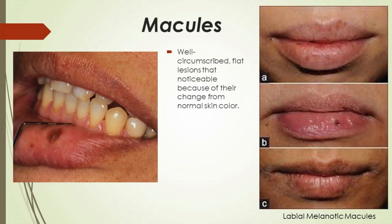Macules are well-circumscribed flat lesions noticeable because of their change from normal skin color. They may be red due to the presence of vascular lesions or inflammation, or pigmented due to the presence of melanin, hemosiderin, or any foreign material.